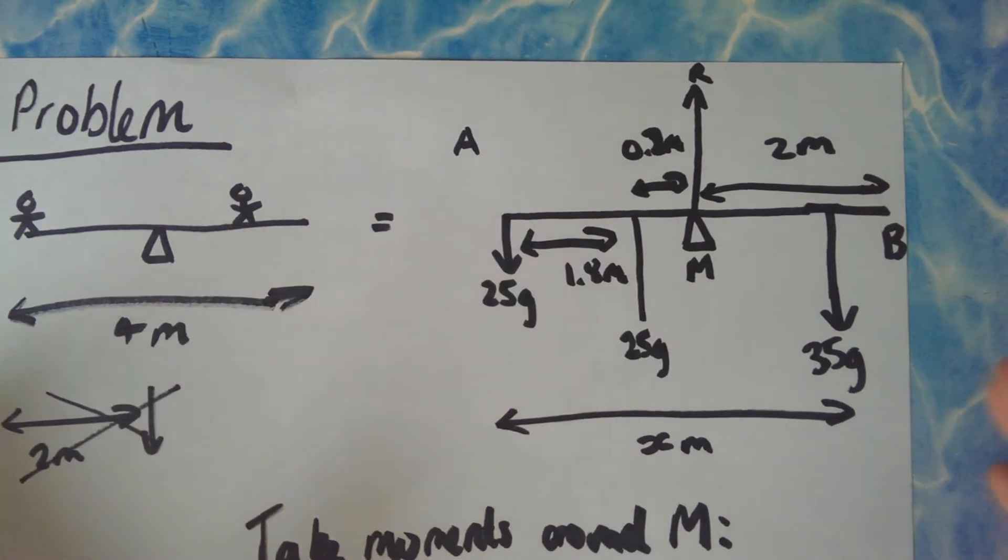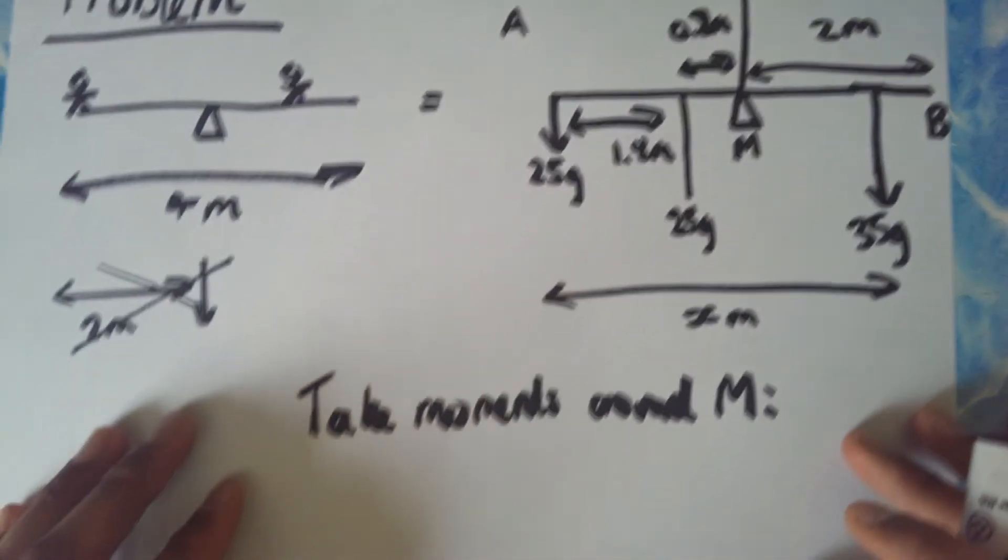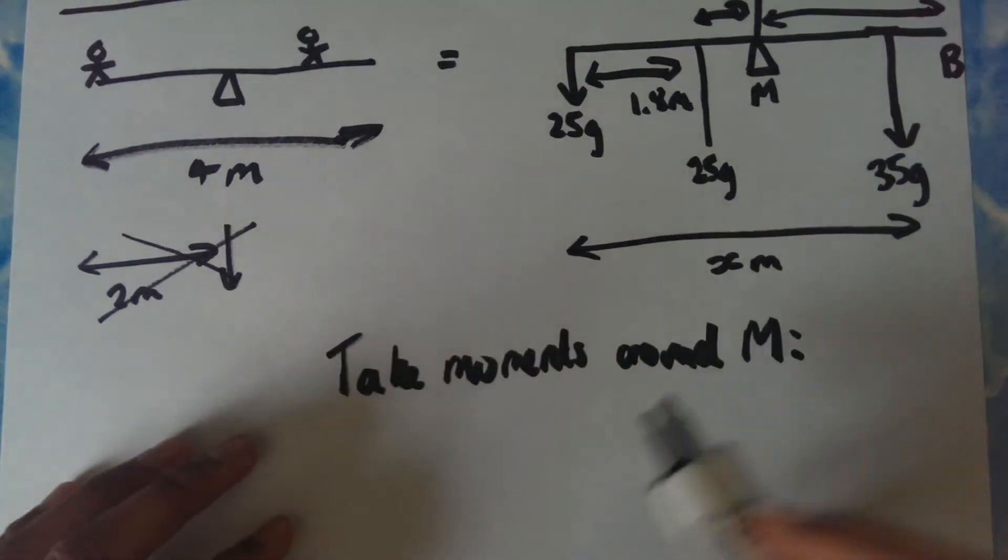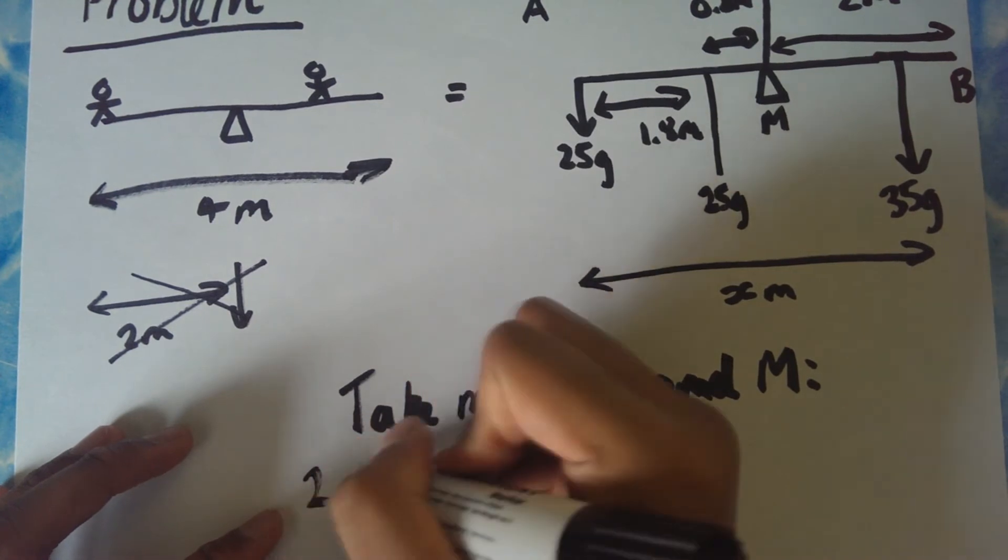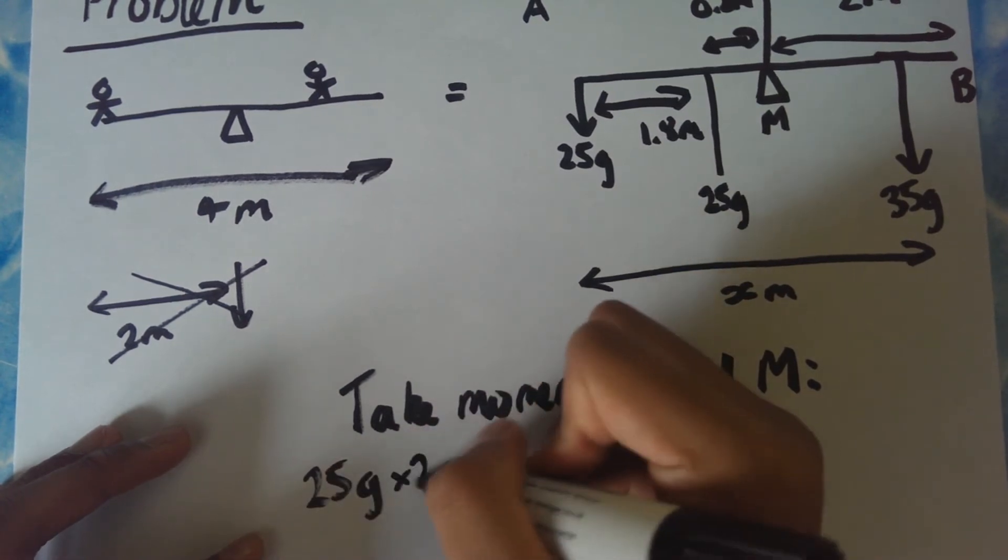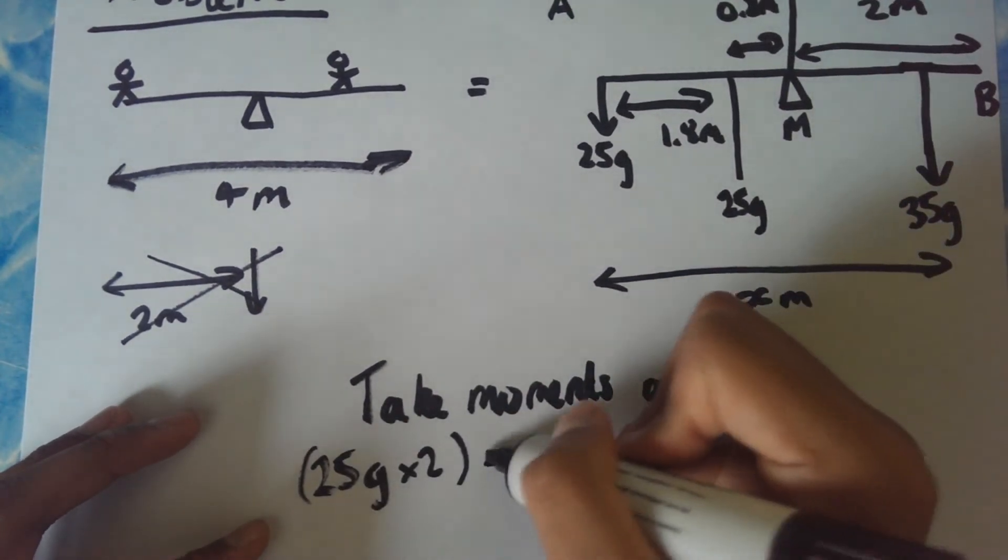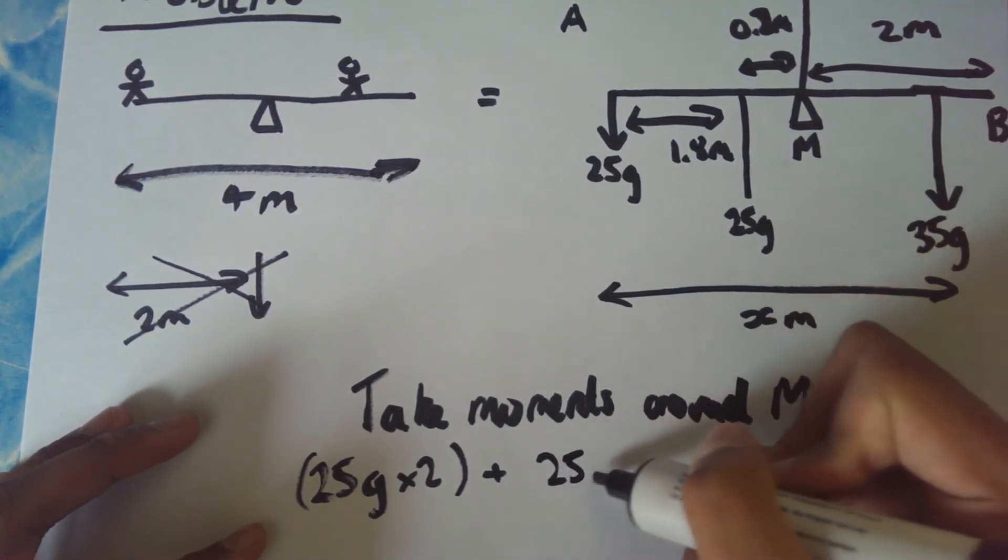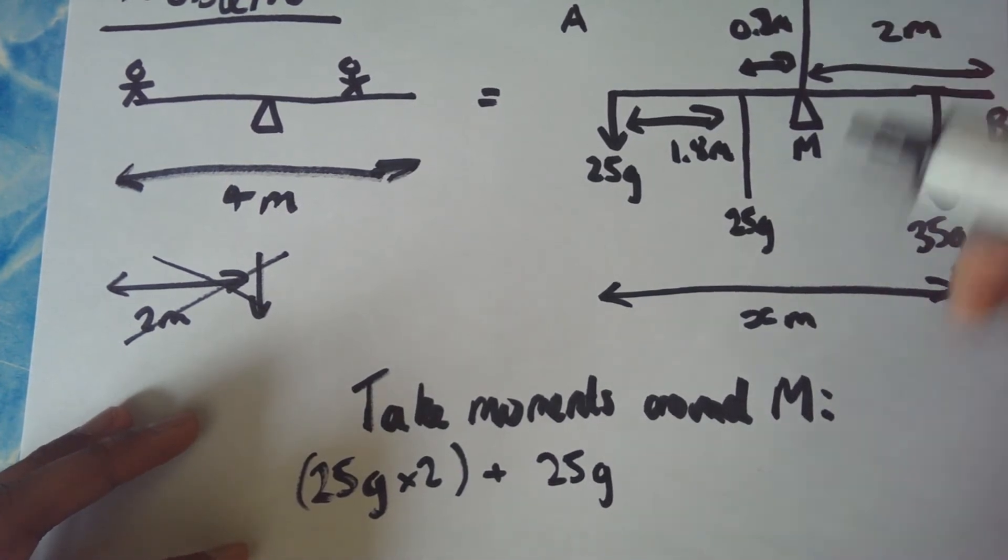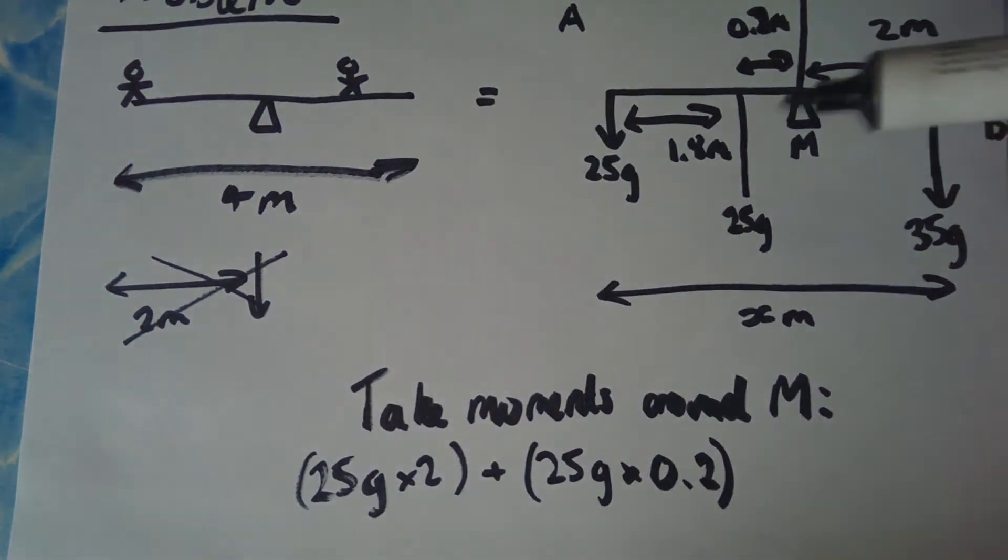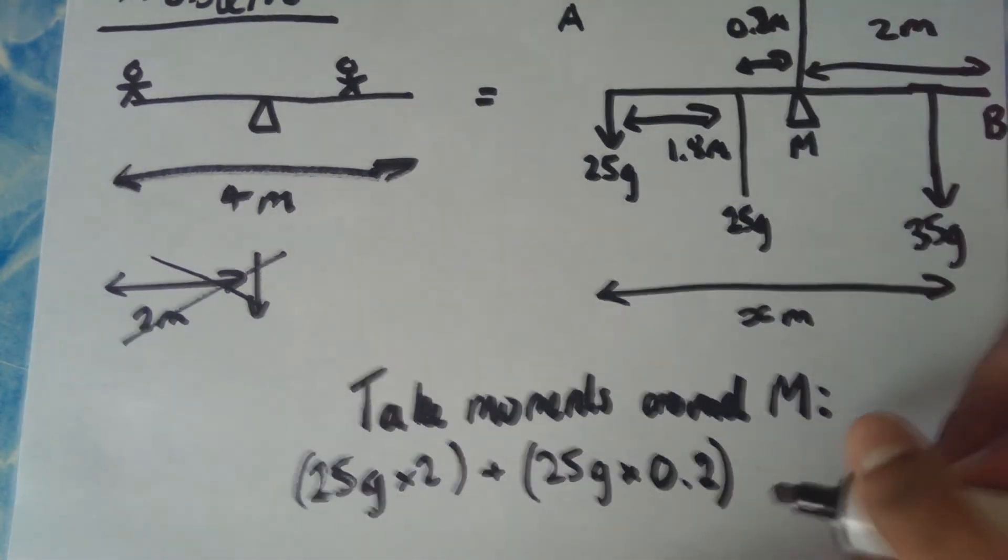Now because we want to make this system in equilibrium, we know that the counterclockwise moments and the clockwise moments should both equal to zero. So I'm going to start with the clockwise moments. So you get 25g times 2, plus this other 25g which is the mass of the rod, 25g, and that is 0.2 meters away from the pivot.